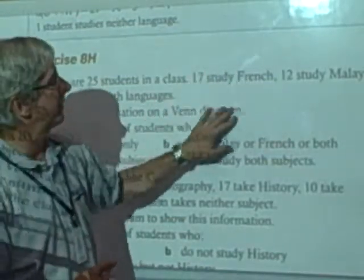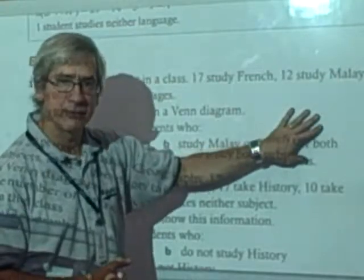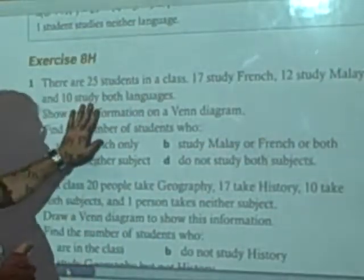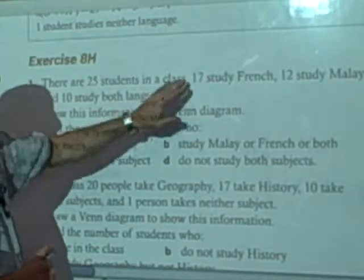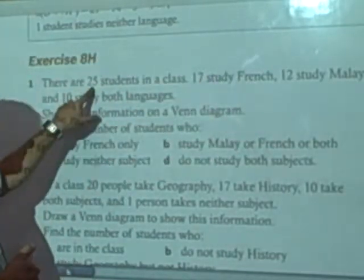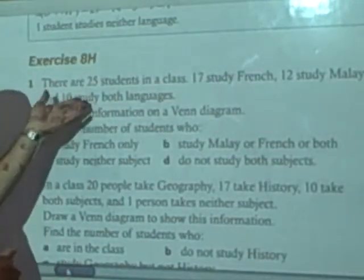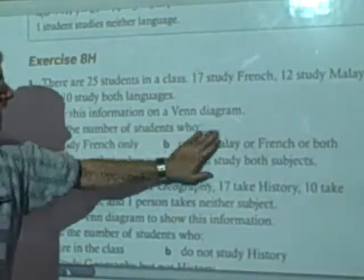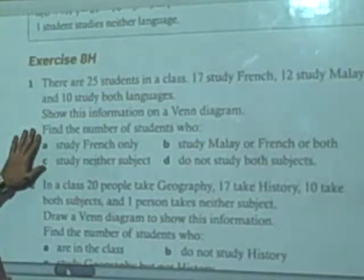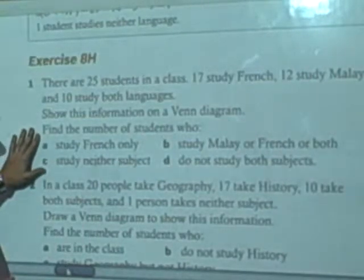Well, the idea is that some of the ones that study French may be studying Malay as well. In fact, I know that 10 of them study both languages. And so that tells me how I can have all these numbers still fit within the 25. In fact, I might have some students that don't study any languages at all.